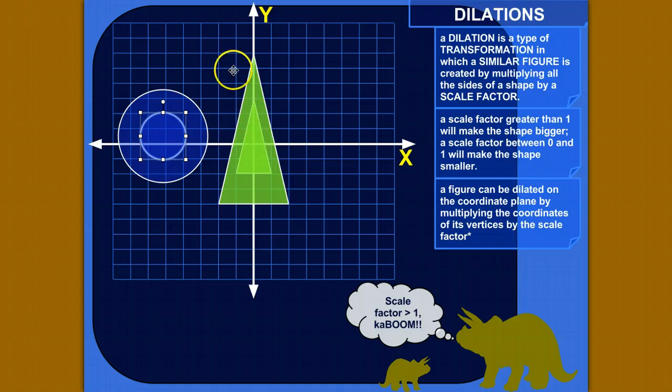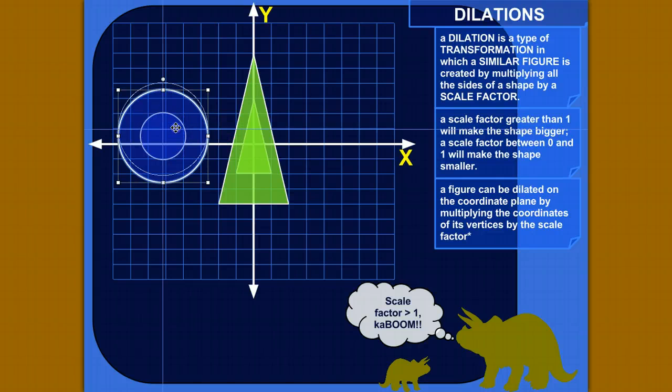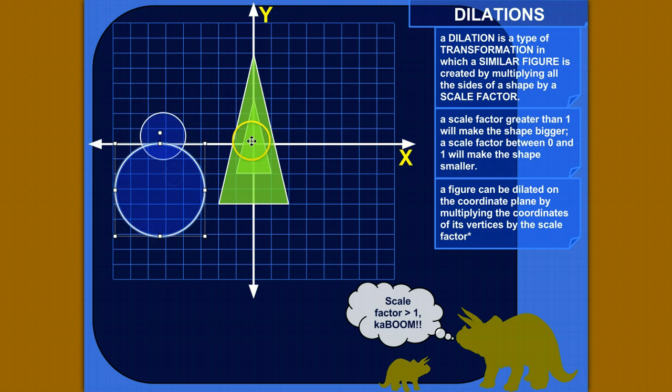You can dilate a figure on a coordinate plane like this by, if it's centered around the origin—that's why I have this asterisk here—you can dilate it by just taking the original figure and then multiplying all its coordinates by the scale factor. So those are some of the basic ideas of what dilations are about.